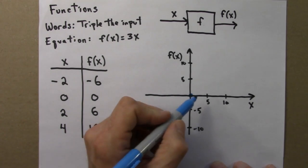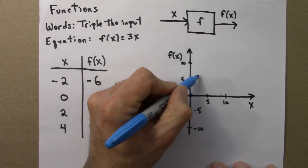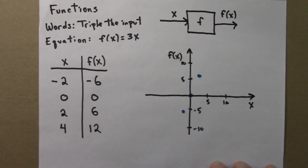2, 6, let's plot that. Over 2, up 6. That's around there.